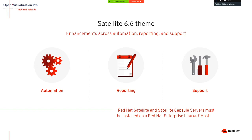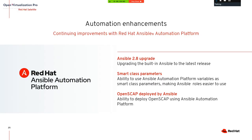Automation: we upgraded the built-in Ansible to version 2.8 and added new built-in roles. For example, the new OpenSCAP role allows you to check your systems against security rules. There is also a tool to check your system according to some security rules using OpenSCAP.